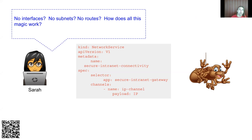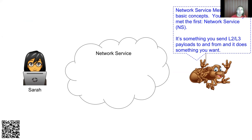Sarah's next question: no interfaces, no subnets, no routes — how does this work? Network Service Mesh has three basic concepts. The first is the Network Service — a logical concept of the thing you want. App developers never want a subnet; I've literally stood in front of 600 app developers and asked how many ever want to know a subnet exists, and couldn't get a single person to raise their hand. What they want is something like 'secure connectivity to my corporate internet' — a service that acts on an L2 or L3 payload.